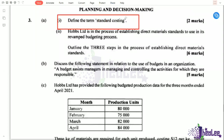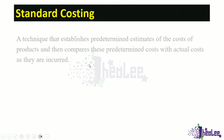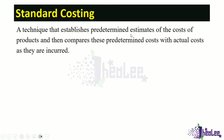Standard costing is a technique that establishes predetermined estimates of the cost of products and then compares these predetermined costs with actual costs as they are incurred. Basically, standard costing is a product system that determines product costs by using standards or norms for quantities and prices of the various inputs.